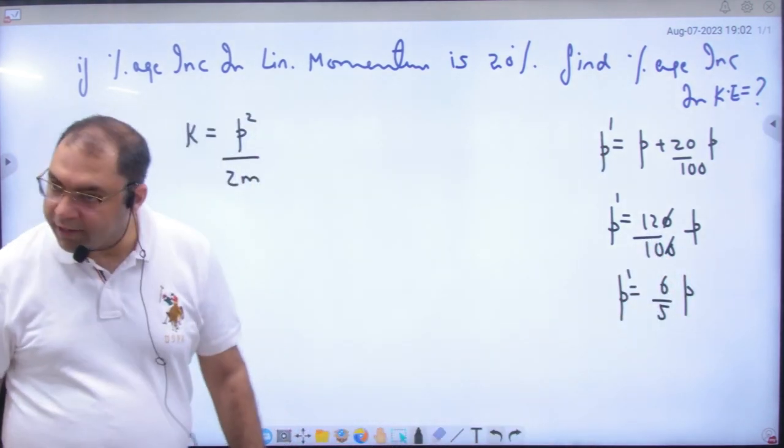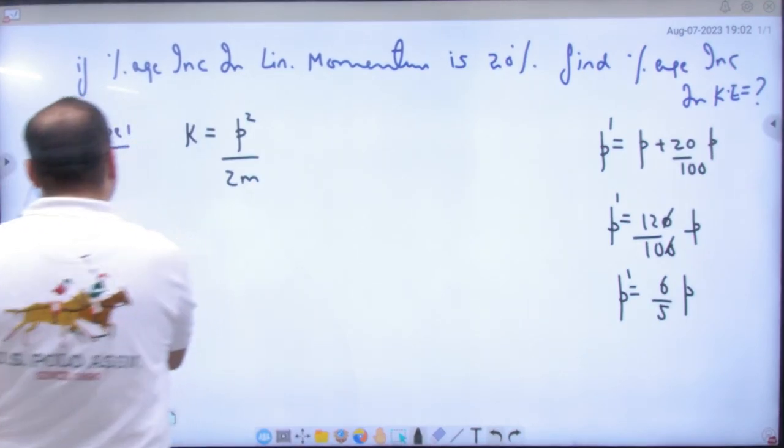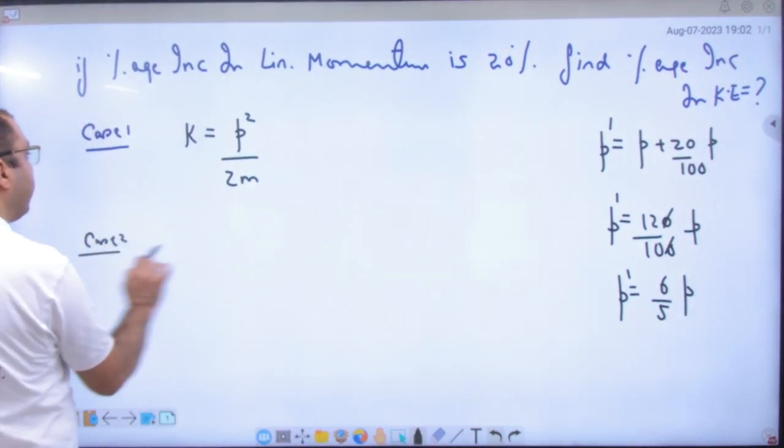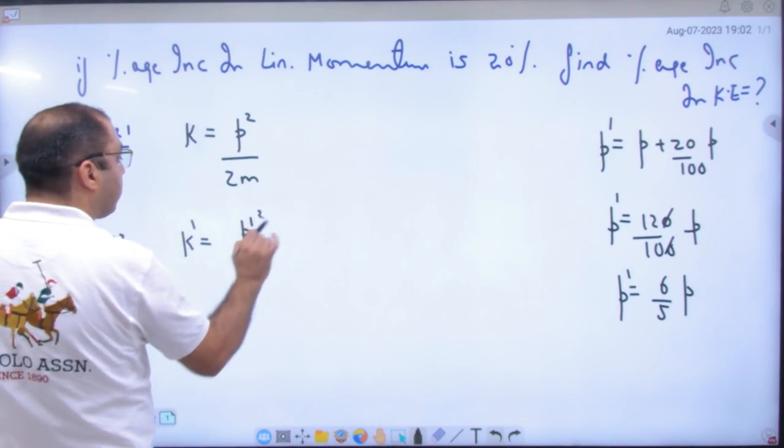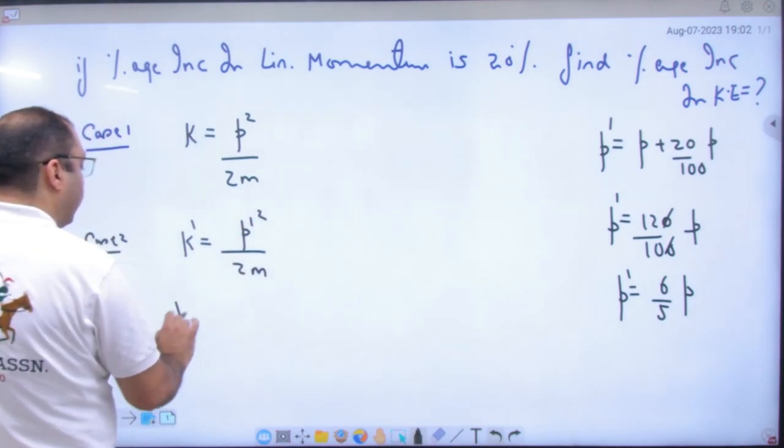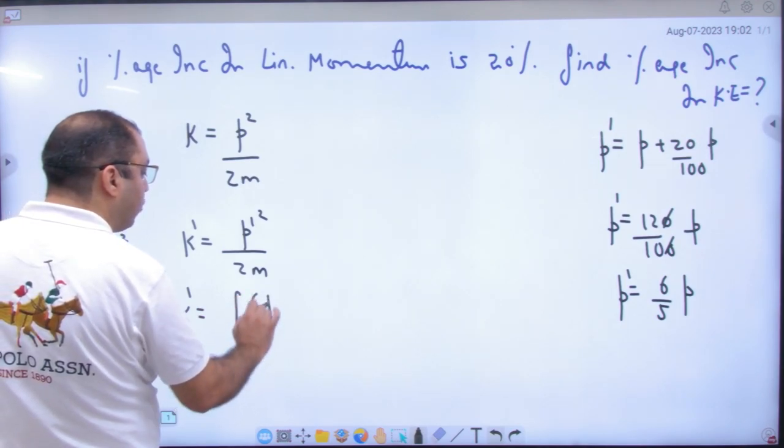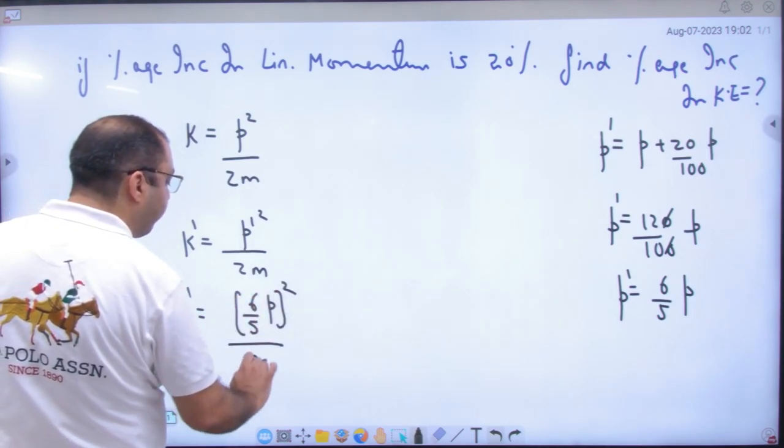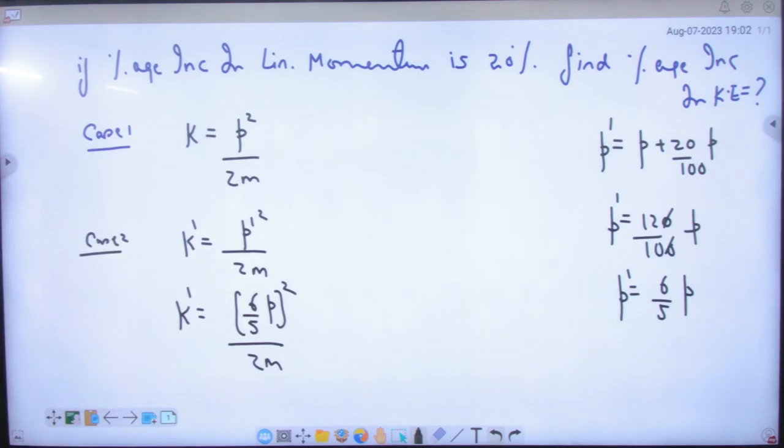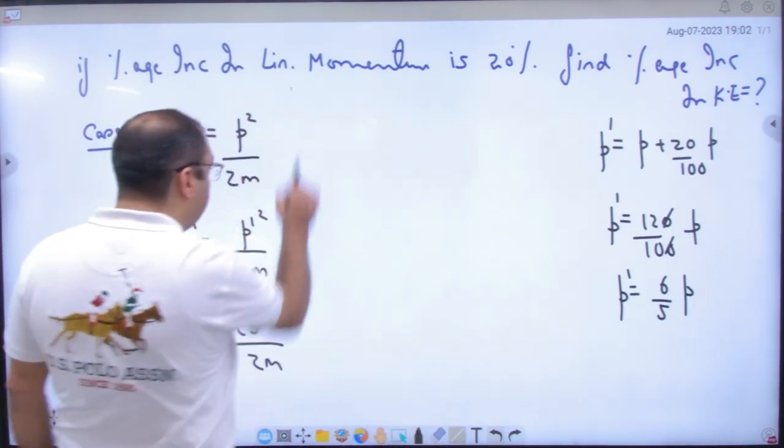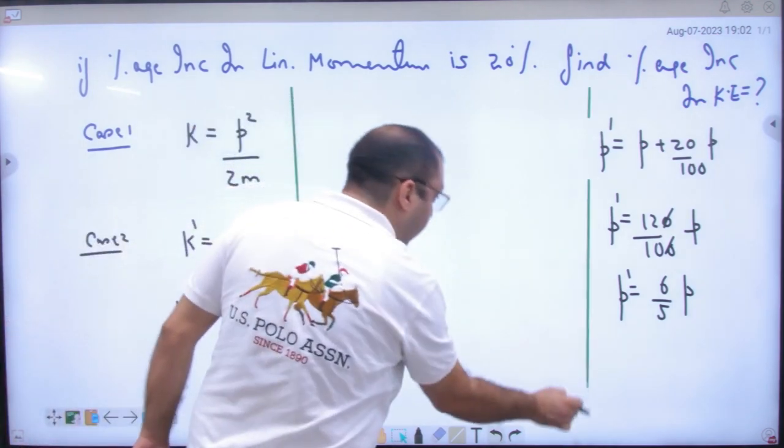Ya momentum aa gaya to nahi kinetic energy. Case number two mein nahi kinetic energy k dash kya ho gai? P dash square by 2m. To nahi kinetic energy p dash ki jaga, six upon five into p ka square by 2m.